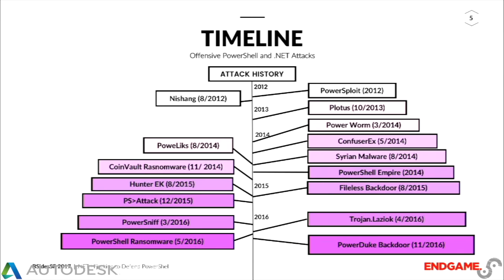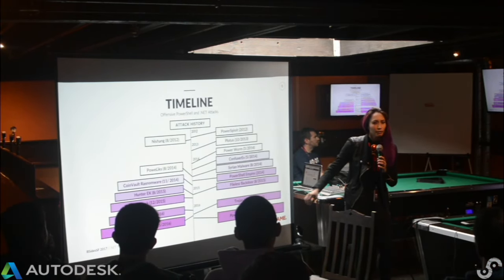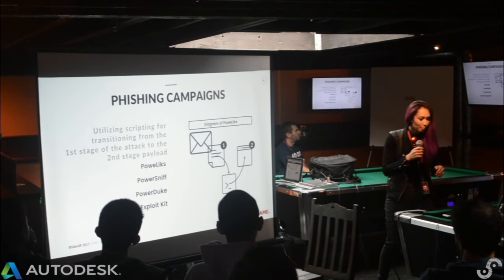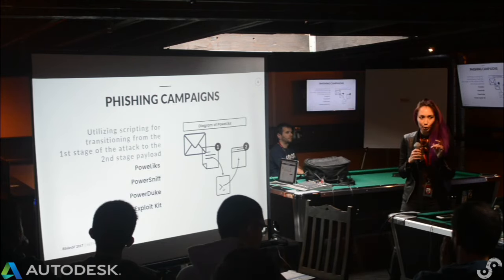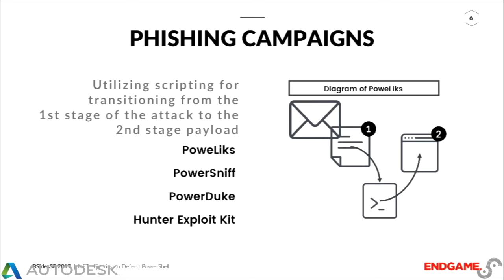This is the timeline I've put together of PowerShell frameworks and PowerShell malware used in the last couple of years since 2012. You can see PowerSploit — everybody knows — Nishang, the offensive framework, PowerLeaks, which was one of the first used to pivot for the payload being fileless. And then PowerDuke — I think it's the same guys who did the DNC hack. Normally PowerShell in actual campaigns is used to transition from the exploitation stage to the second stage, which is the actual payload. It either becomes a payload or it executes a payload — examples include PowerLeaks, PowerSniff, PowerDuke, and some Hunter exploit kit variations.